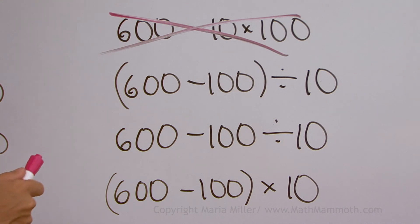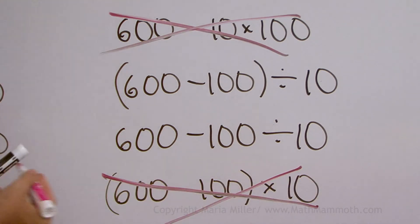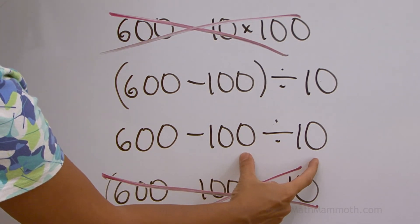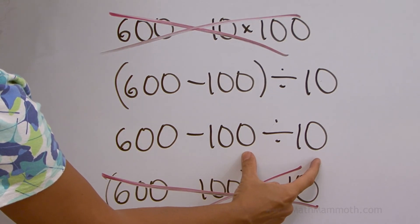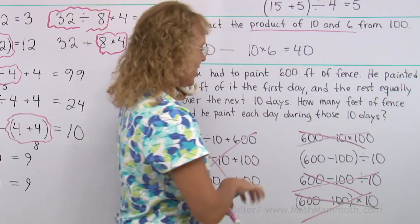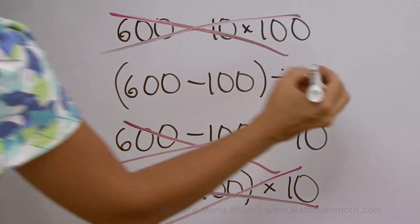And the wrong ones are this one, because it's not division. And this one, because here you would divide first. By the order of operations, division would be done first, then subtraction. Okay? So that's wrong too. And the last one is the winner. You subtract first, then divide. And the answer should be 50 feet.